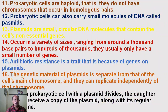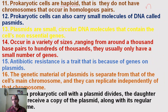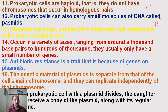Prokaryotic cells are haploid, meaning they have a single set of chromosomes (N). In contrast, eukaryotic cells have diploid chromosomes (2N). Prokaryotic cells do not have chromosomes in homologous pairs because the chromosome is single. These prokaryotic cells can also carry small molecules of DNA called plasmids.